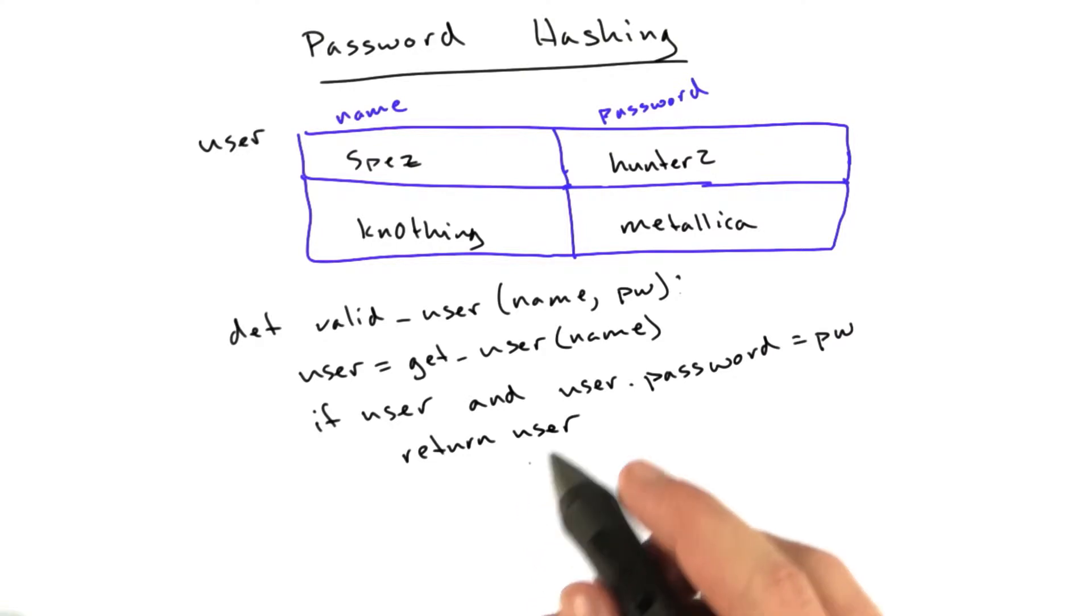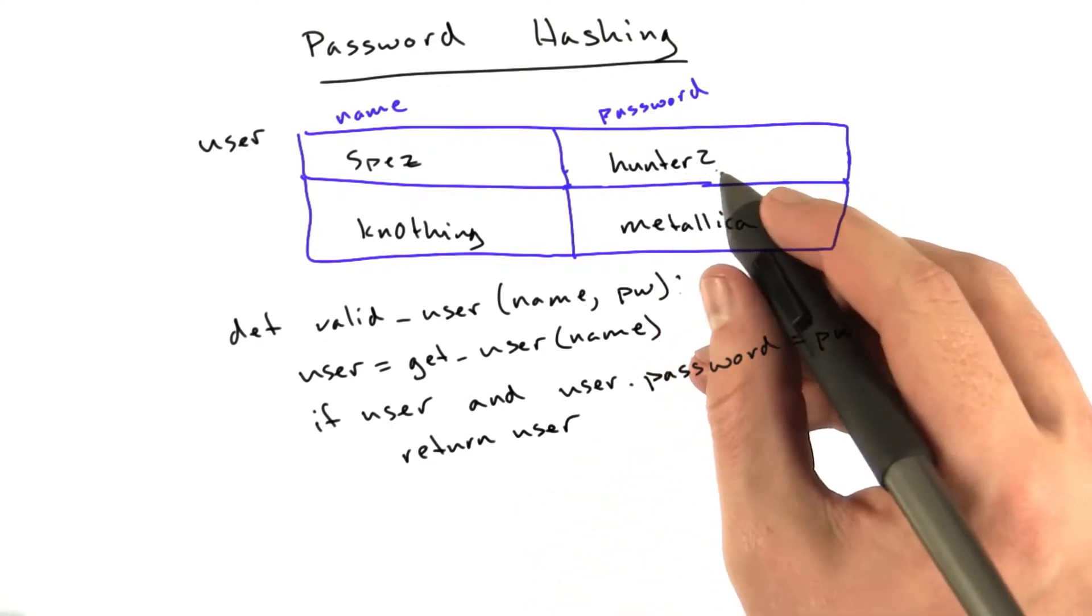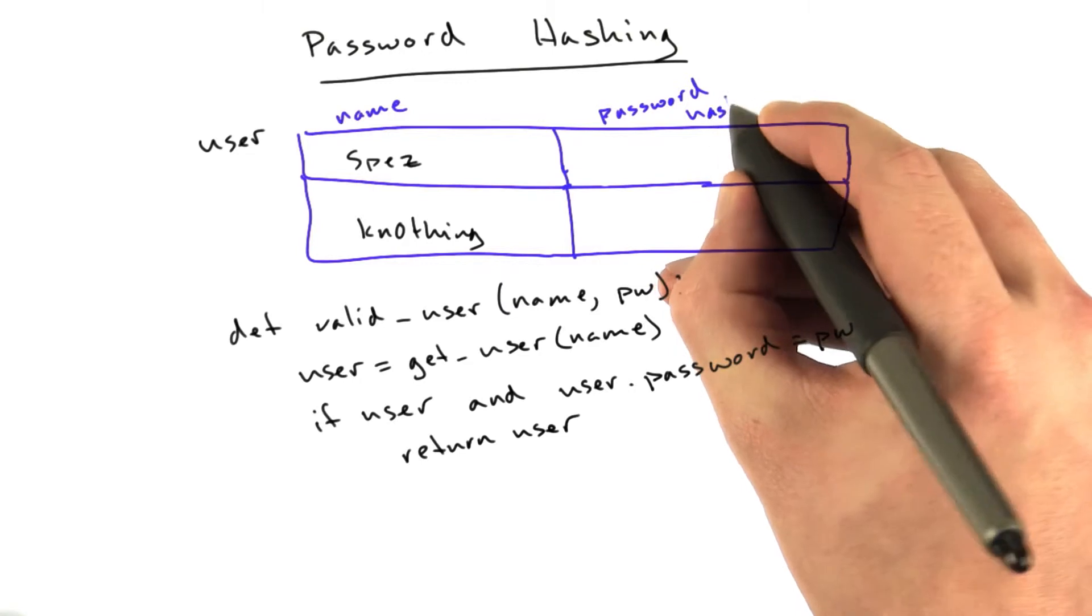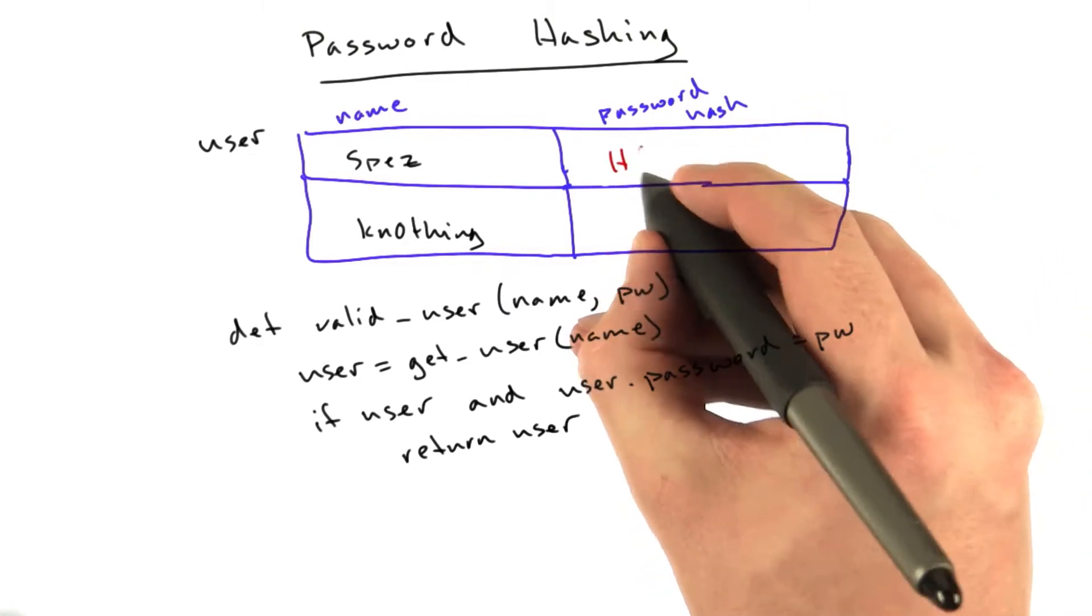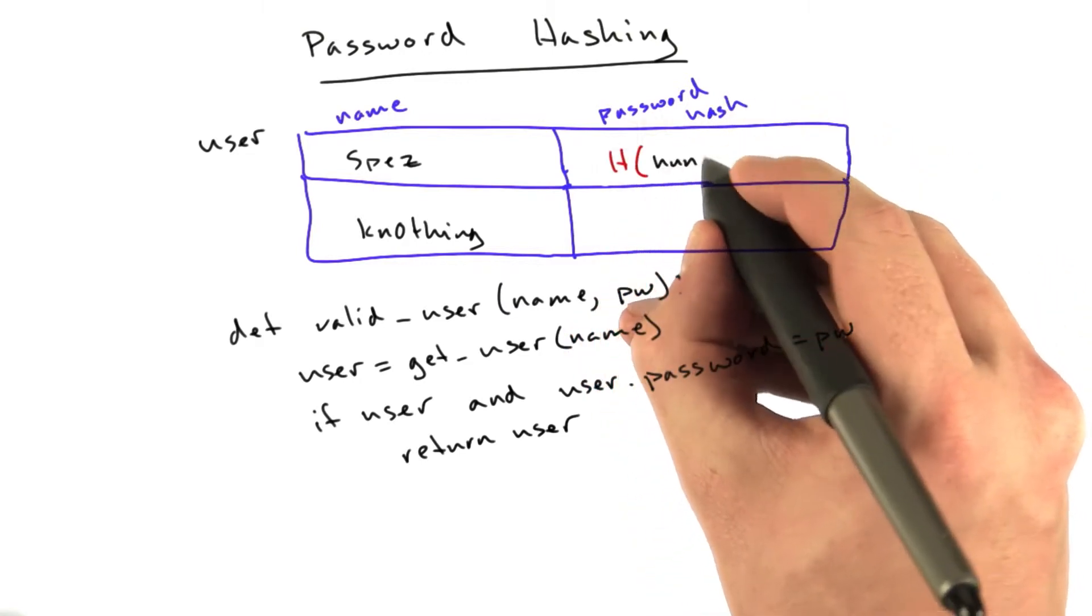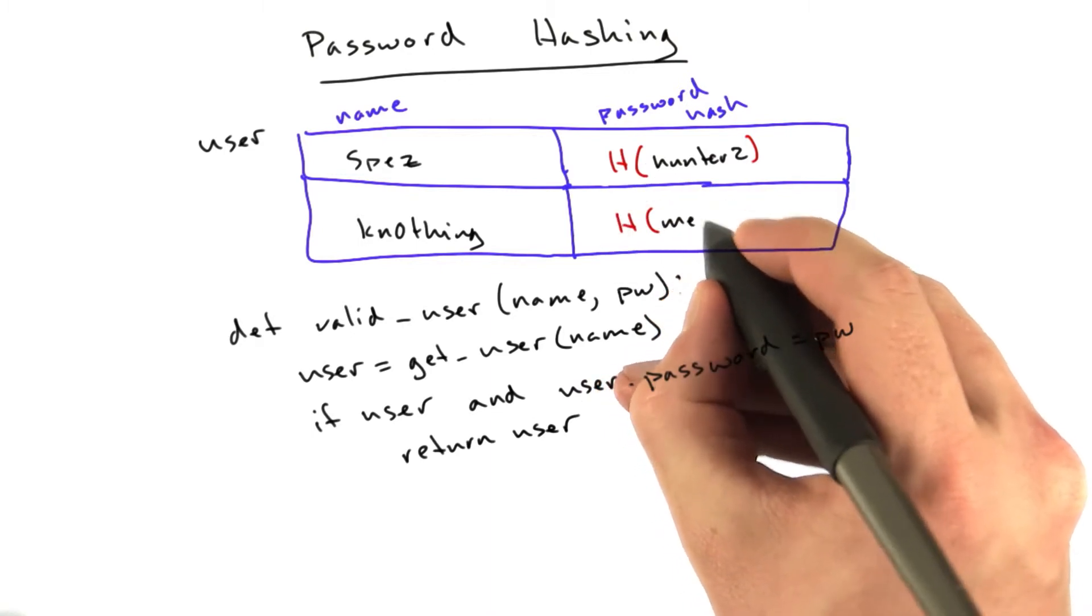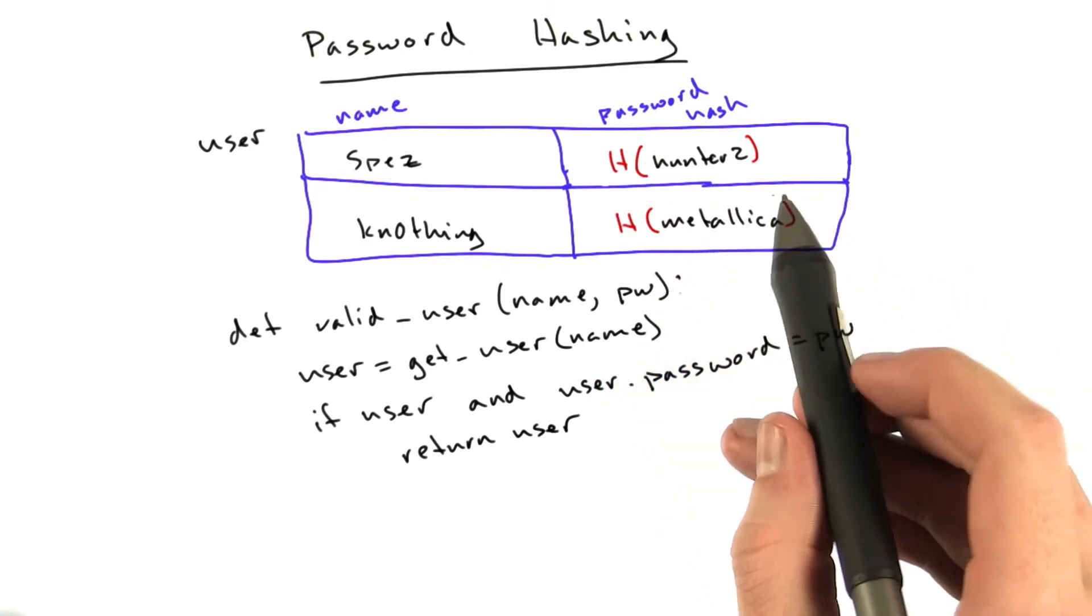So what we want to do is instead of storing these plain text passwords in our database, we'll store password hash in our database. So we'll have h of hunter2 and h of Metallica, and if our database gets compromised, all the attacker has is a bunch of password hashes.